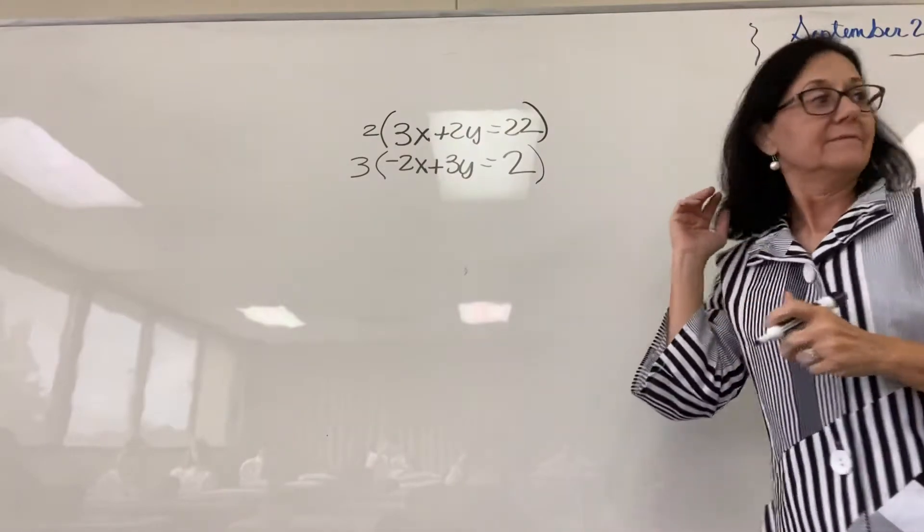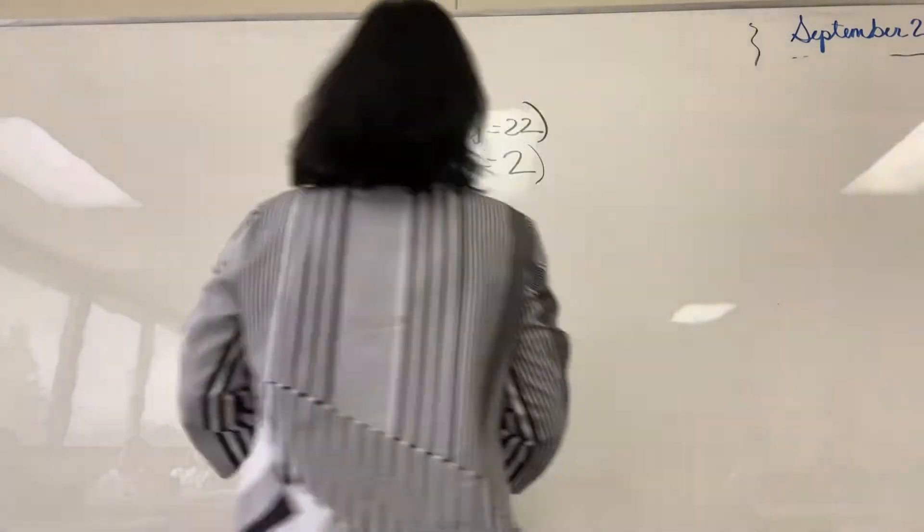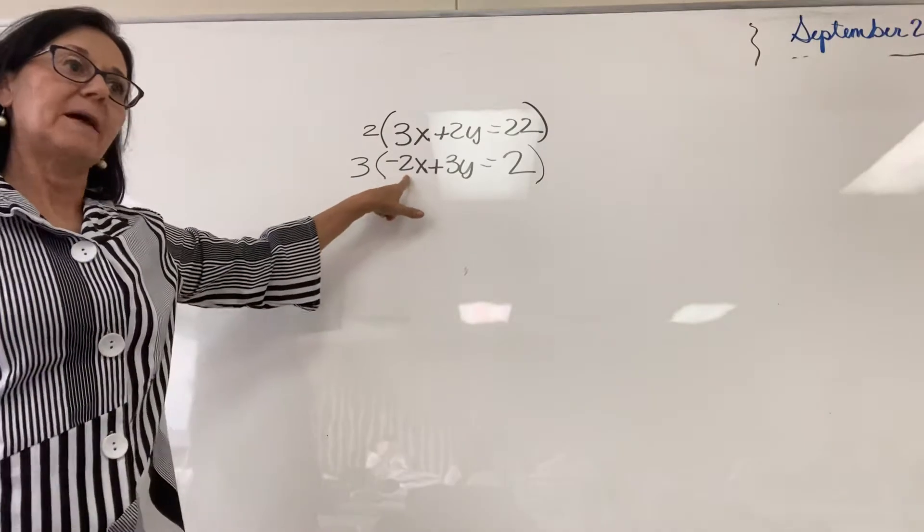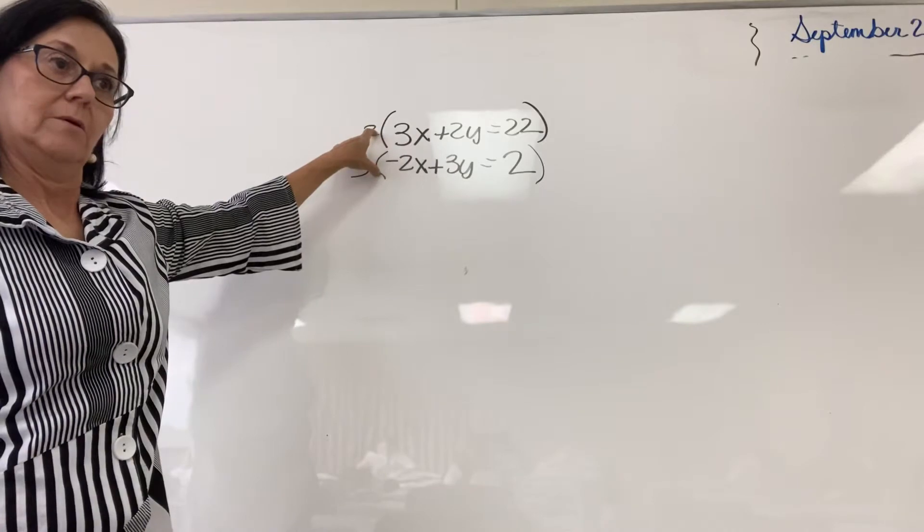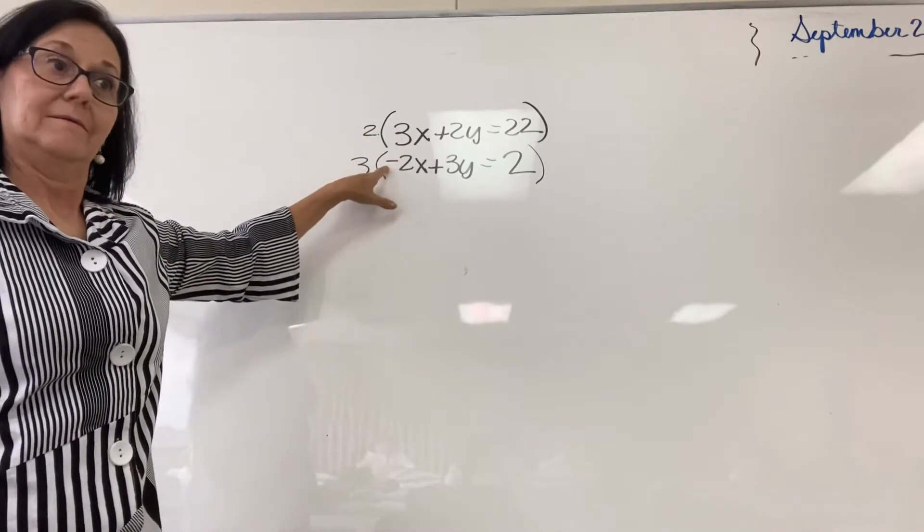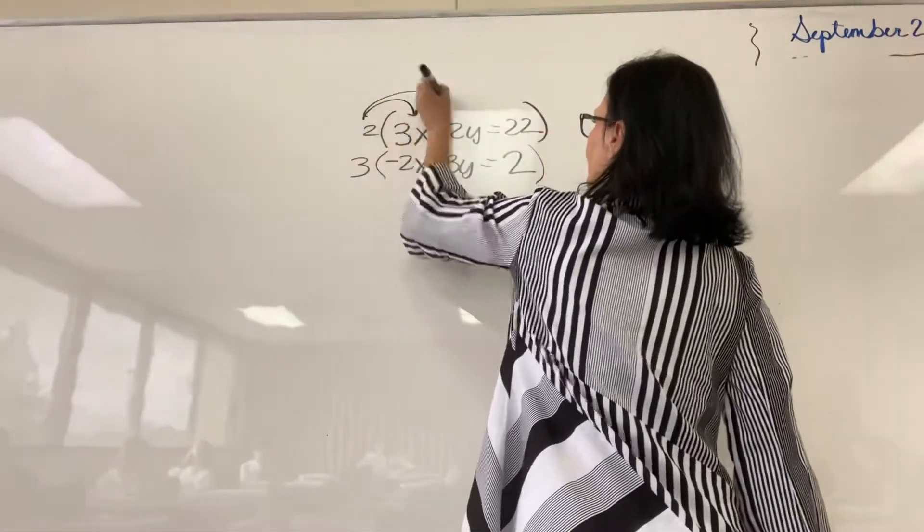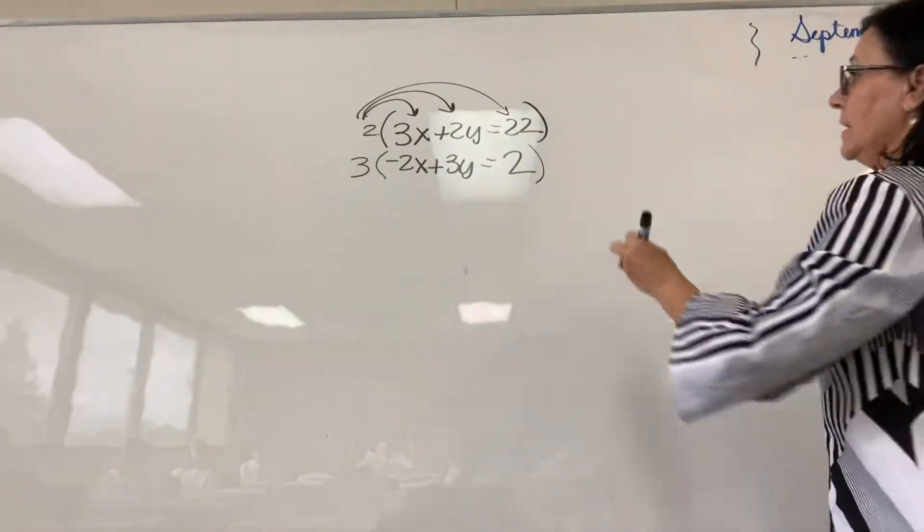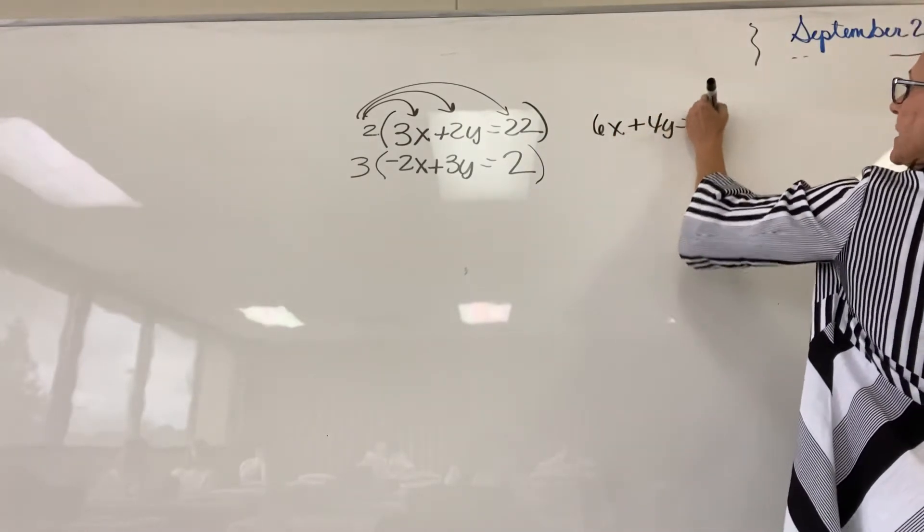I'm so confused on how you know which term to multiply. Okay. I look, I have a 3x. I have a negative 2x. And I ask myself, what must I do to make them the same number? But opposite signs. Make sense? Yes. I'm very glad you asked that. So, we're multiplying the 2 by every term. I always draw those arrows so I don't forget. So, we end up with 6x plus 4y is equal to 44.